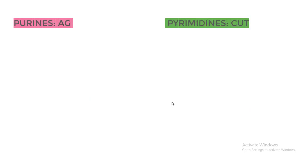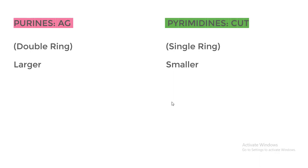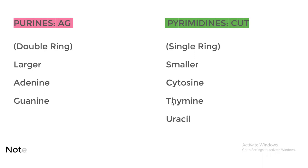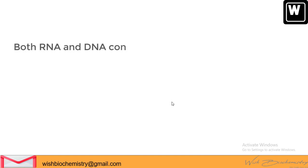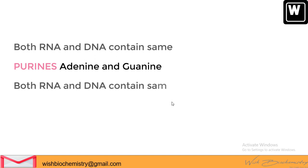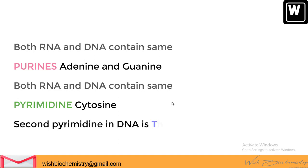Purines are double-ringed and larger in size compared to pyrimidines, which are single-ringed and smaller. There are two types of purines — adenine and guanine — whereas there are three types of pyrimidines: cytosine, thymine, and uracil. Note that the size difference helps them in pairing. Both DNA and RNA contain the purines adenine and guanine. The pyrimidine cytosine is present in both DNA and RNA, but thymine is only in DNA and uracil is only in RNA.